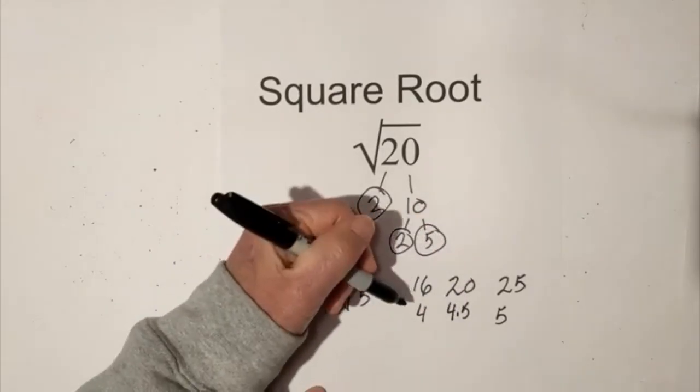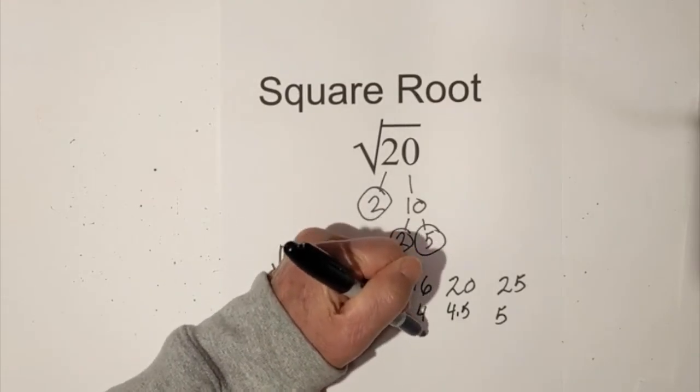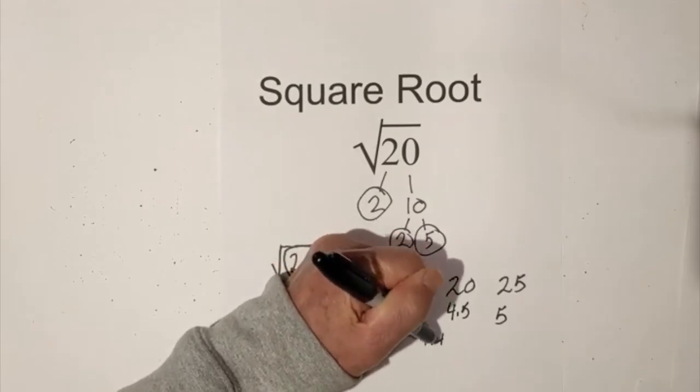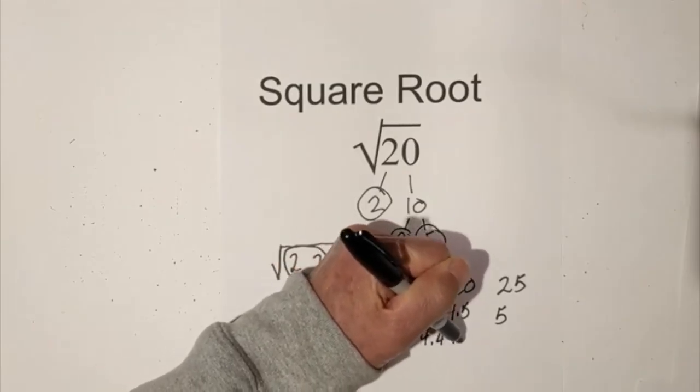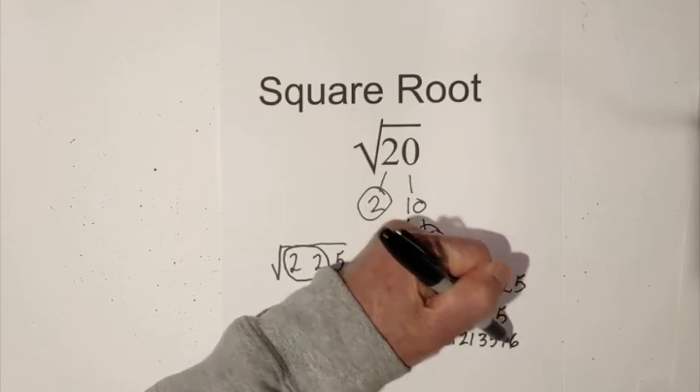Now if you put it in your calculator or a square root calculator, it will give you this number 4.47213596.